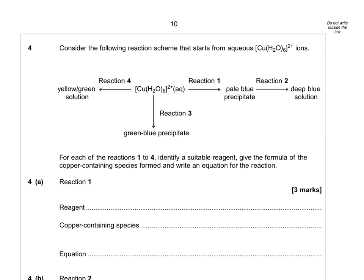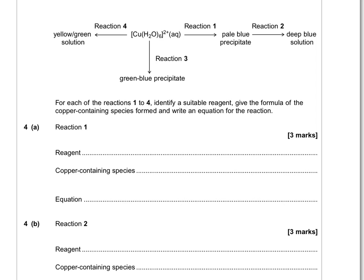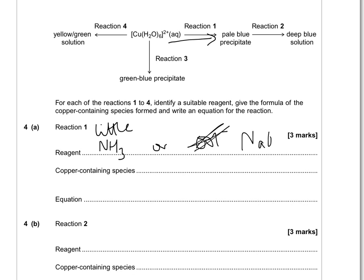Consider the following reaction scheme starting from the hexaaqua ion. For each of reactions 1 to 4, identify a suitable reagent and give the formula of the copper-containing species. Reaction 1 gives a pale blue precipitate — you need either a little NH₃ or OH⁻, so the reagent would be NaOH. The copper-containing species is copper hydroxide: Cu(OH)₂·4H₂O. The equation is: [Cu(H₂O)₆]²⁺ + 2OH⁻ → copper hydroxide species + 2H₂O. Each OH⁻ takes a hydrogen from one of the water ligands.